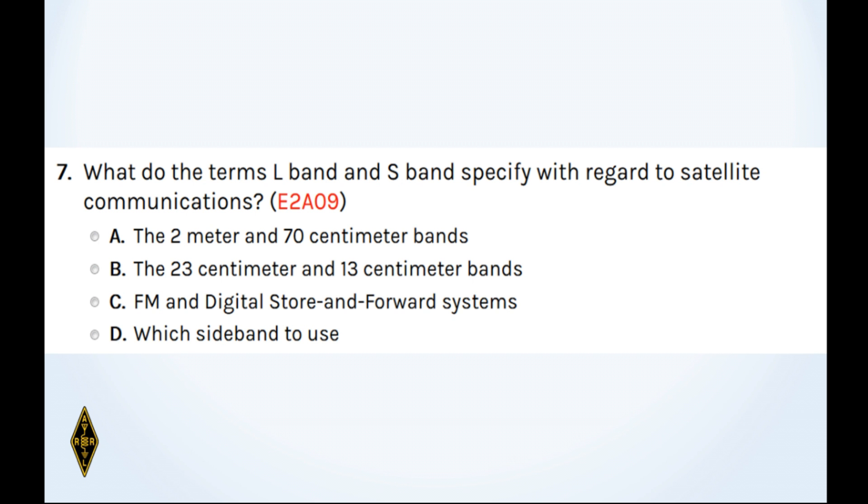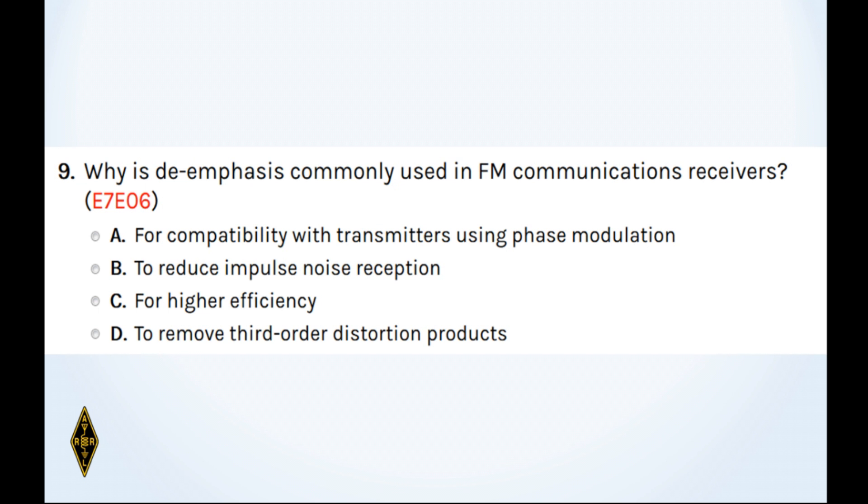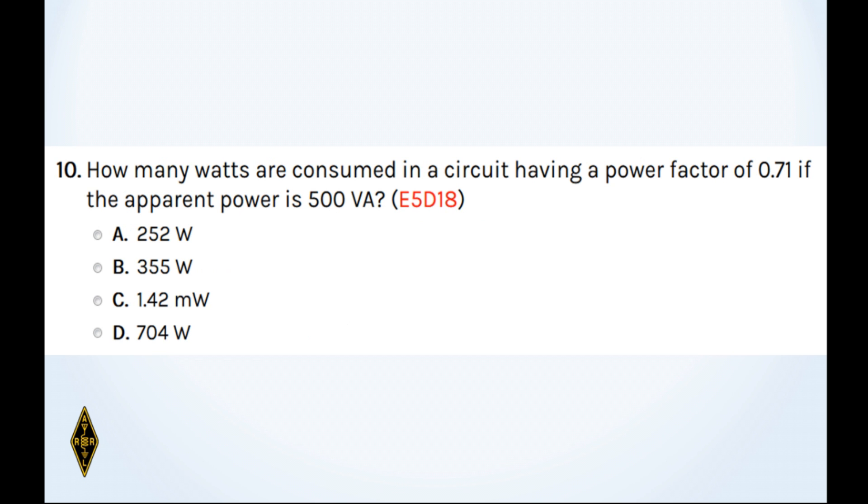And when scheduling EME contacts, which of these conditions will generally result in the least path loss? And question 9, why is de-emphasis commonly used in FM communications receivers? And 10, how many watts are consumed in a circuit having a power factor of 0.71 if the apparent power is 500 VA?